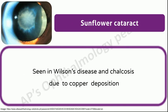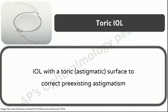Sunflower cataract: seen in Wilson's disease and chalcosis bulbi due to copper deposition. Chalcosis bulbi is the term given to the changes occurring in the eye as a result of an intraocular copper alloy foreign body. Toric IOL: an IOL with a toric or astigmatic surface to correct pre-existing astigmatism.